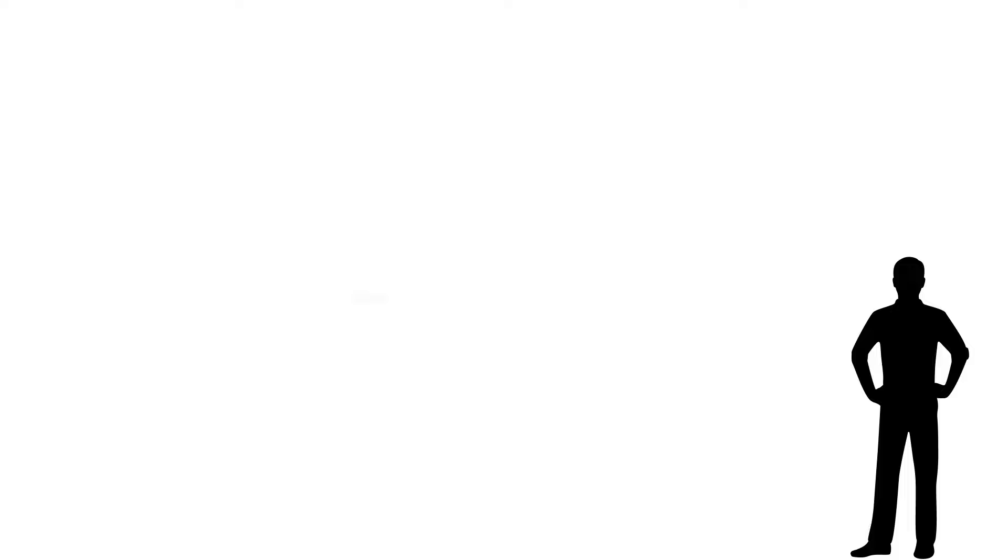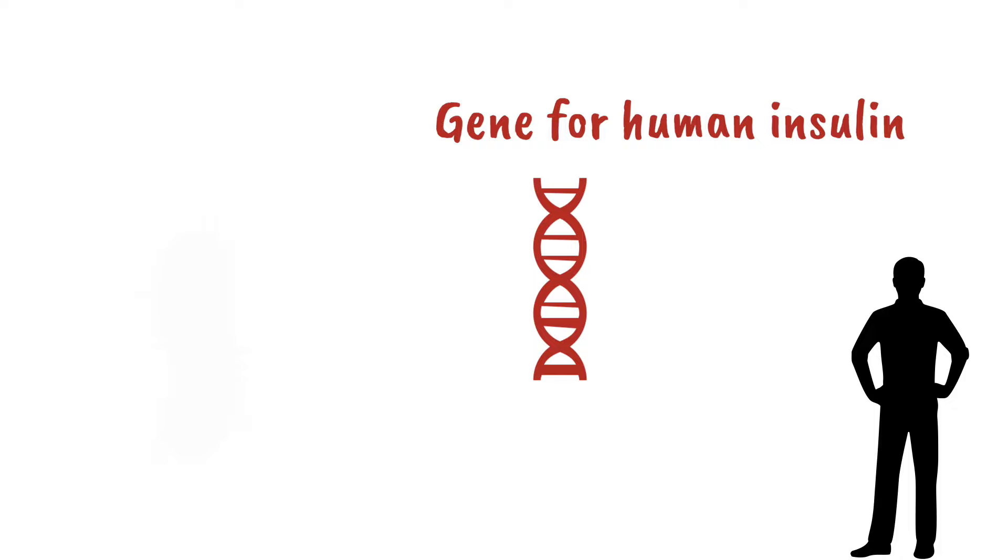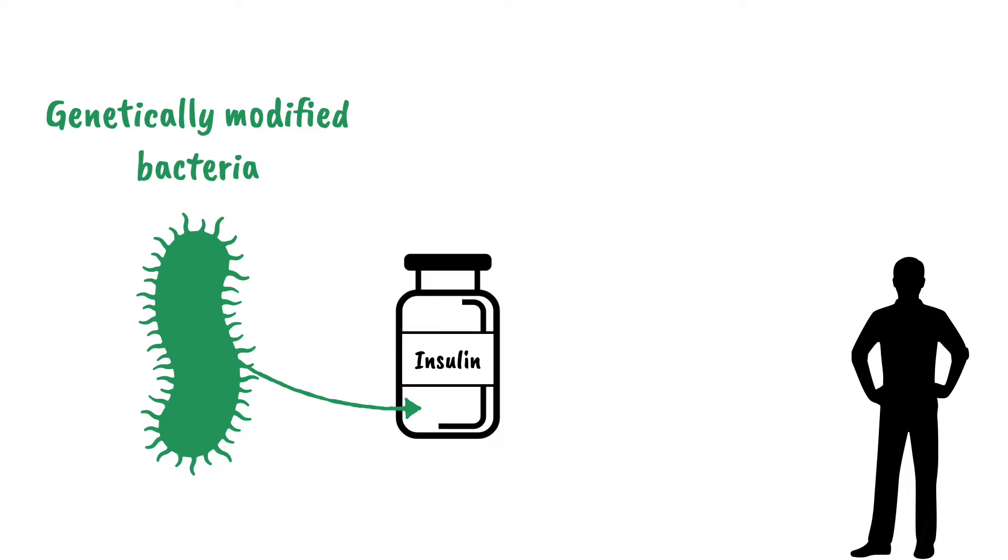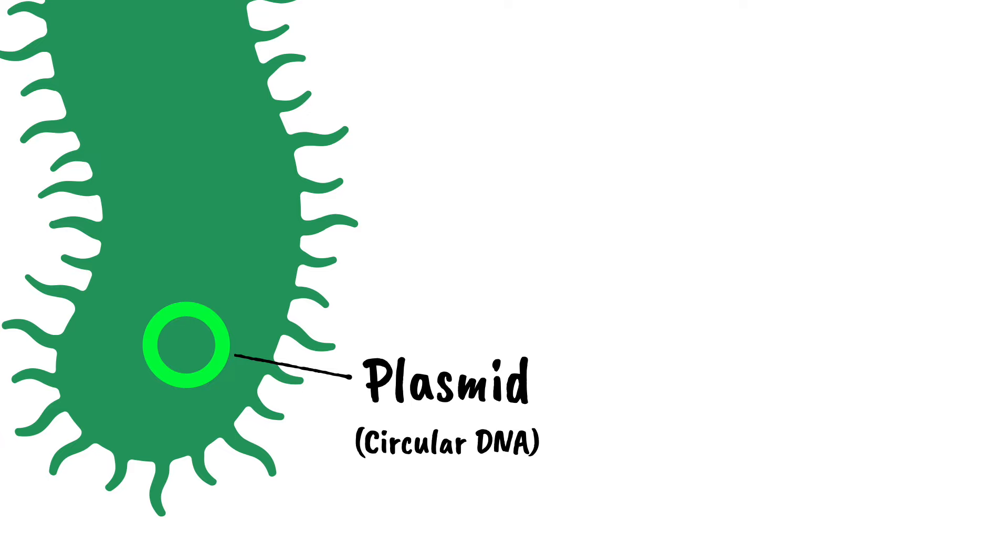We take the gene, the genetic instructions for human insulin, and insert that gene into bacteria cells, and allow the genetically modified bacteria cells to make the insulin for us. Here's how it works. Bacteria cells have little circles of DNA in them, called plasmids. We take out these plasmids, and then use a restriction enzyme to open them up. The plasmids now have what we call sticky ends.